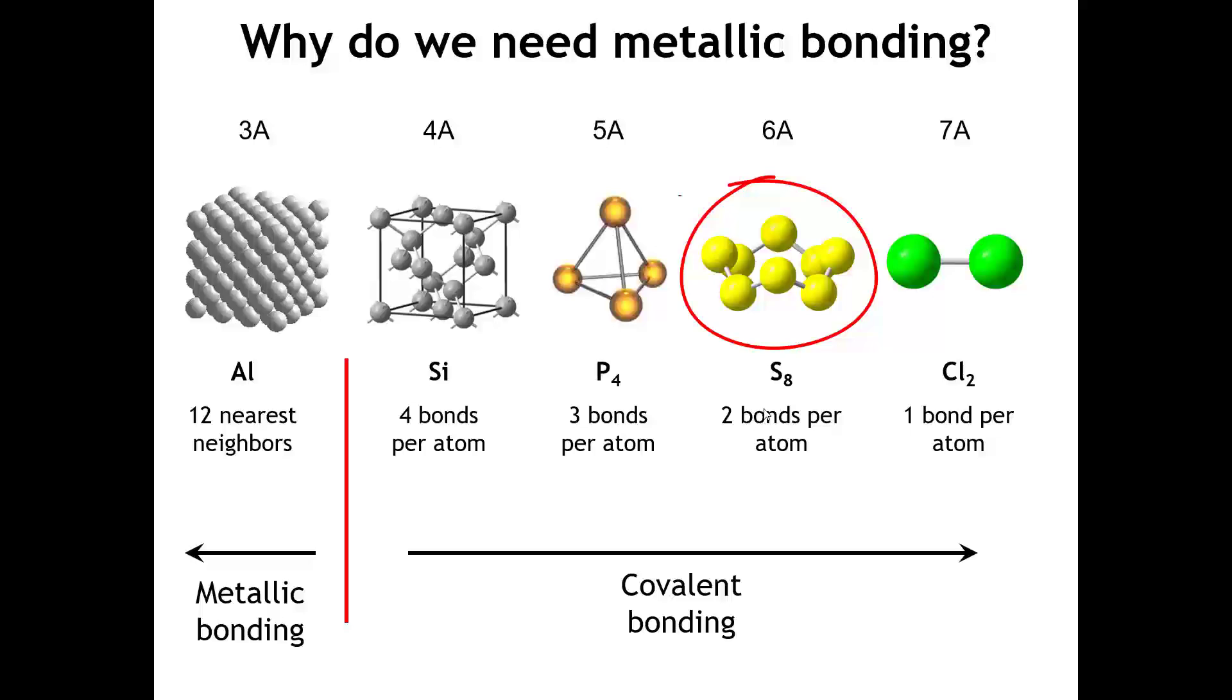Hence, elements like sulfur form two bonds. Here in sulfur, we get a ring containing eight sulfur atoms with each sulfur bonded to two neighbors. When we go to group 5A, elements like phosphorus and arsenic and nitrogen, then we need to make three bonds to complete our octet. And phosphorus has various allotropes. This one is the molecular one, white phosphorus, where the four phosphorus atoms form a pyramid.